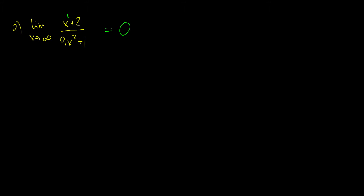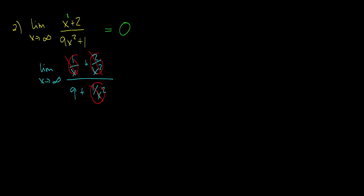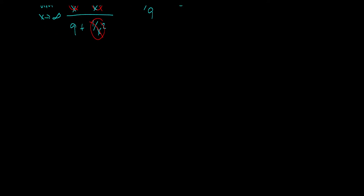Now if you don't know how to do it this way, you can divide the top and bottom all by x squared. So you get the limit as x goes to infinity of (1/x + 2/x²) all divided by (9 + 1/x²). These terms would all go to zero, so you would be left with zero over nine, which is just equal to zero. So two ways you can solve that question.